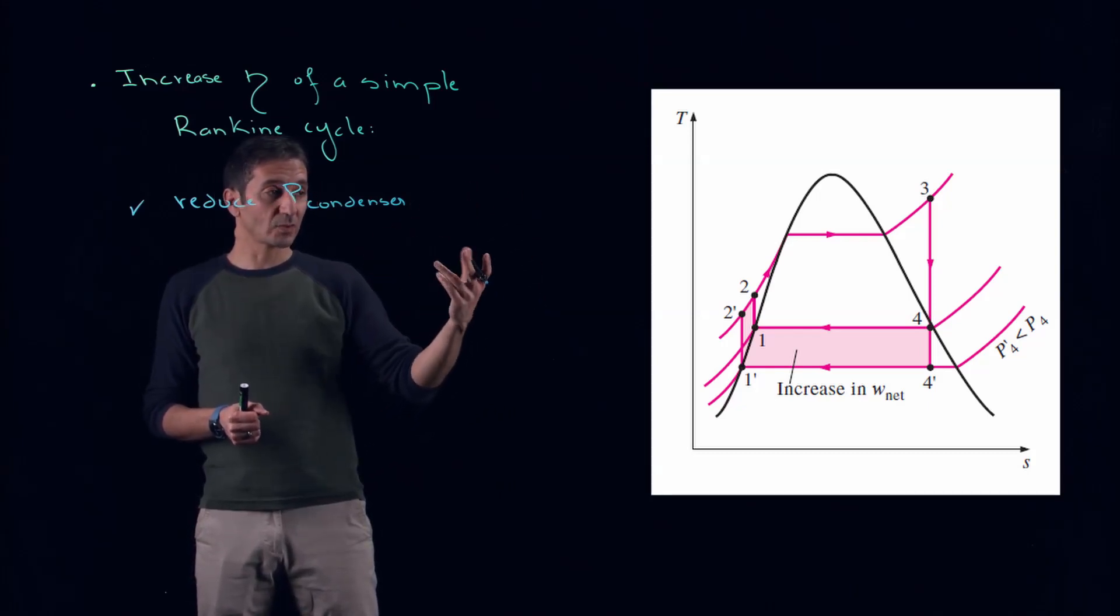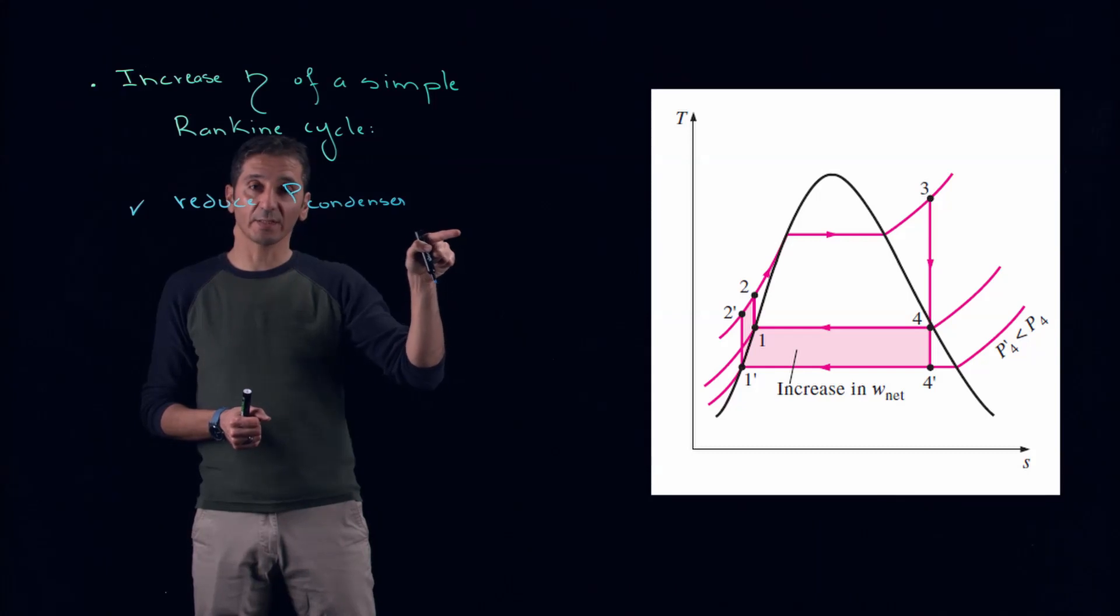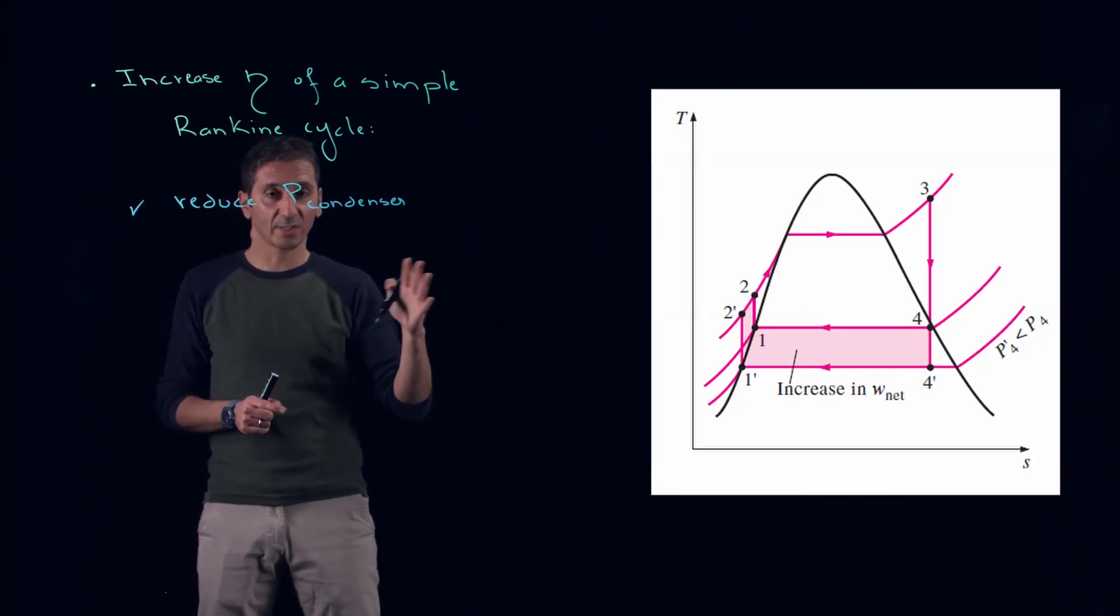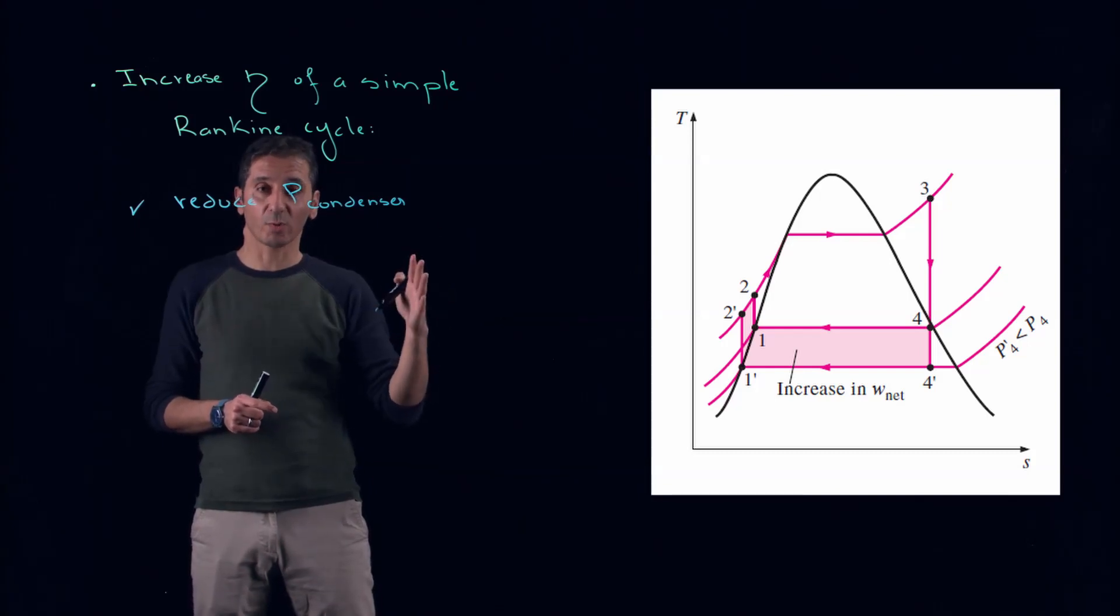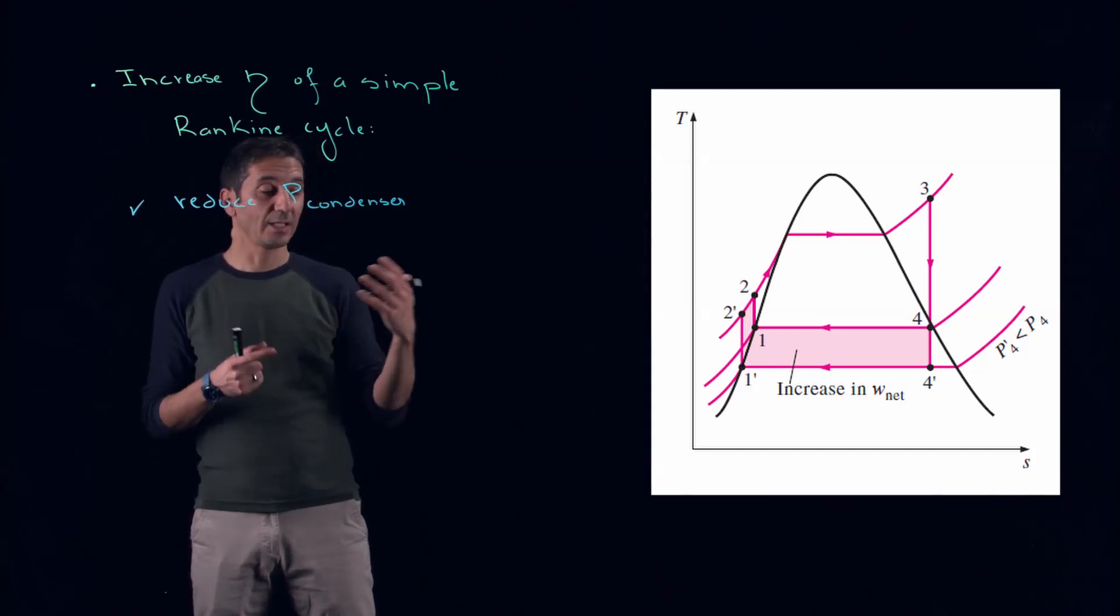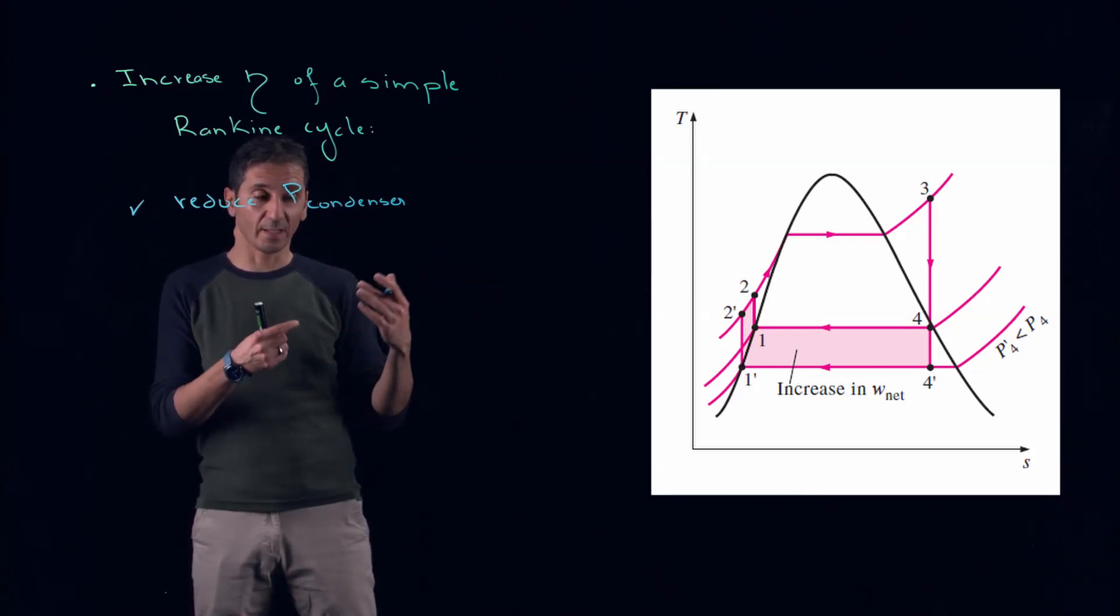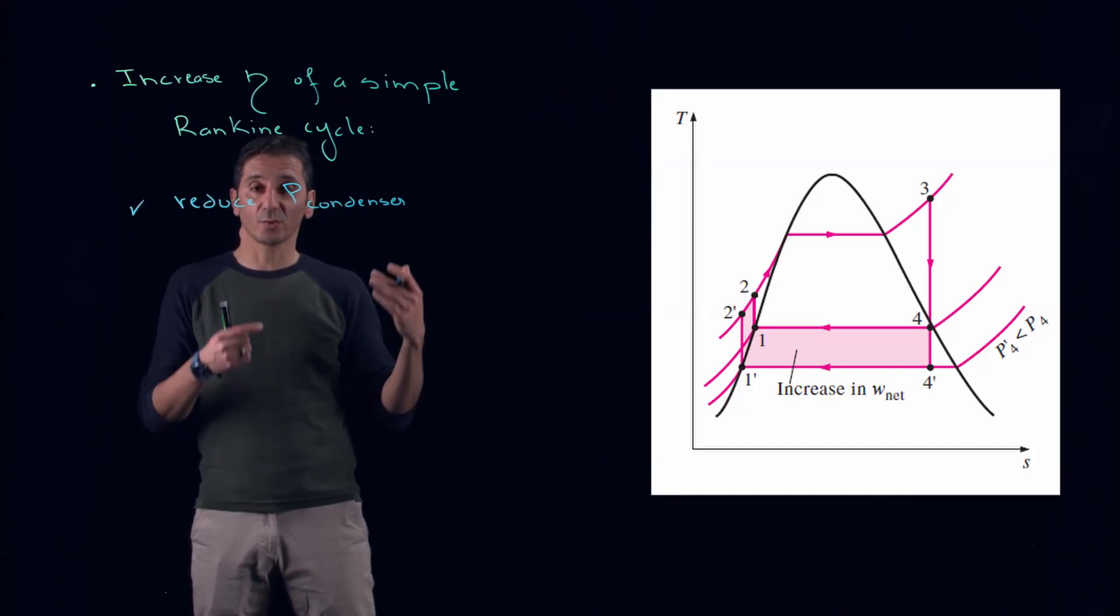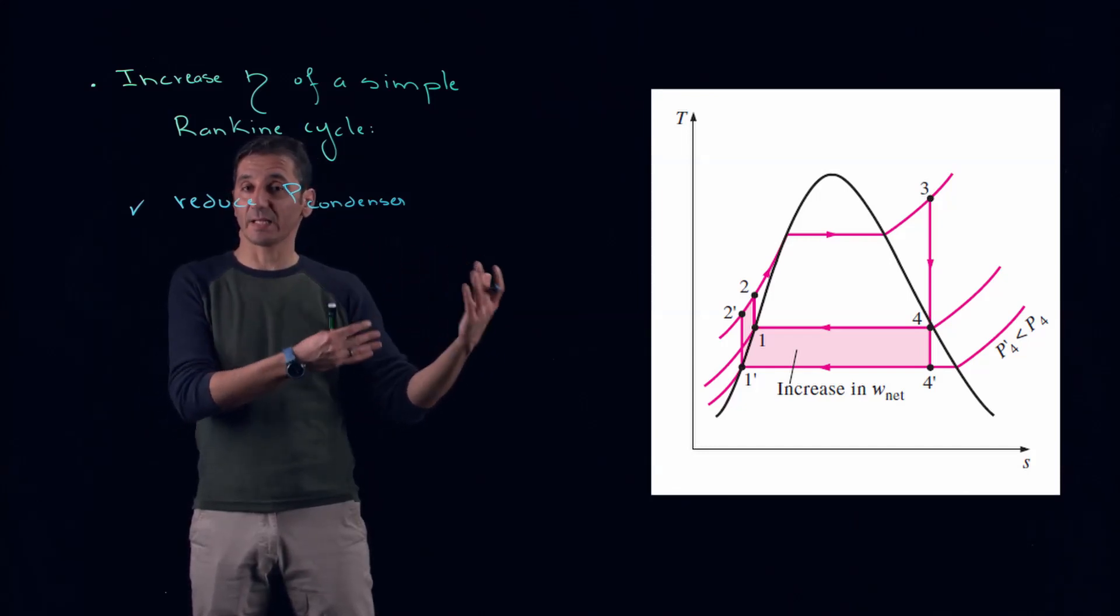But what we can notice, and this is something we will have to always keep in mind, is what's going on with the quality. Point 4 is moving a bit to the left. What does it mean? This means that the quality is going down, which is not good news for us, because lower quality means more moisture, more droplets, and therefore this can reduce the efficiency of our work and also reduce the lifespan of our turbine.